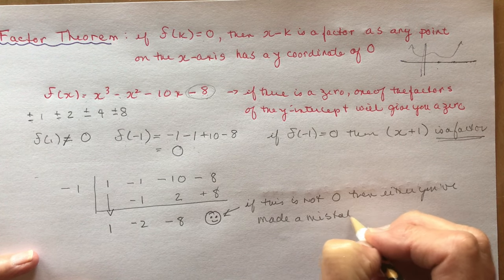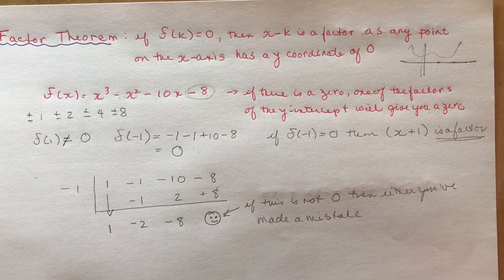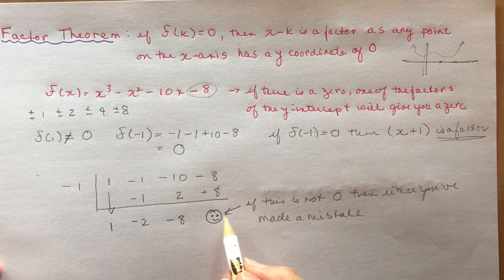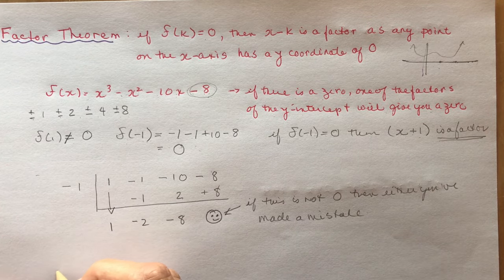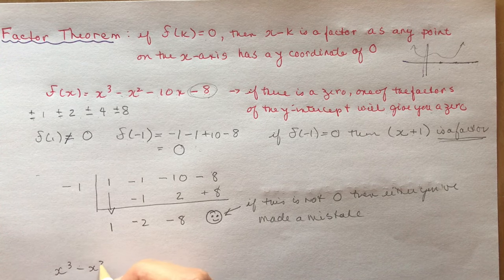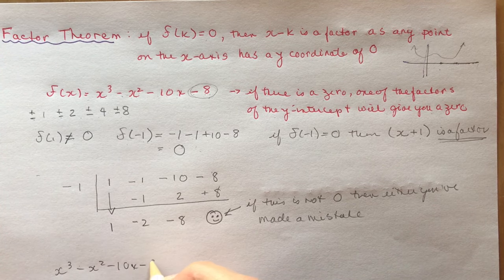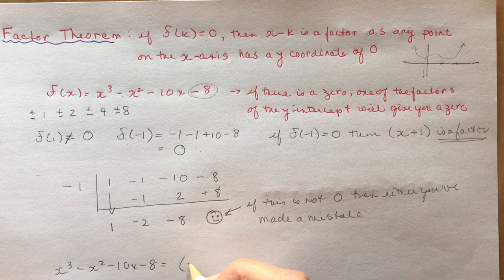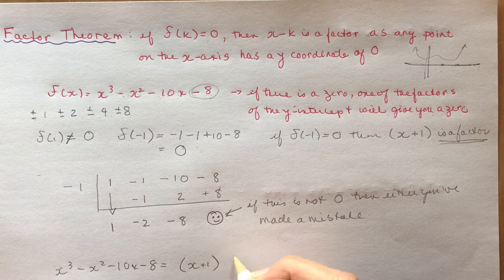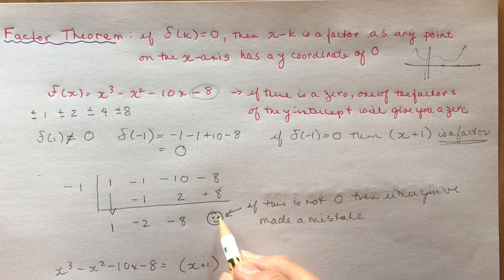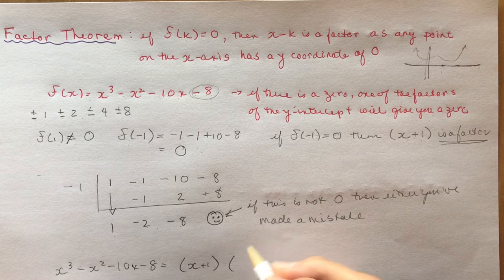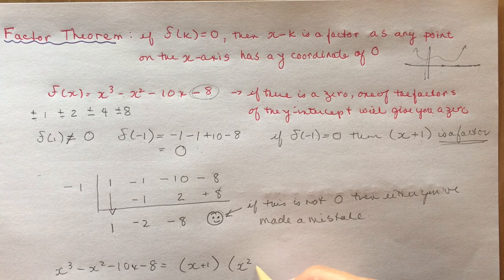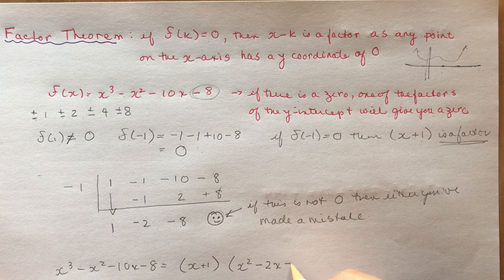If this is not 0, then either you made a mistake or you didn't find a factor — because there can be no remainder. So now that I know x plus 1 is a factor, I can say that x cubed minus x squared minus 10x minus 8 equals x plus 1 times the quotient. Remember: the last term is your remainder, then your x term, then your x squared term.